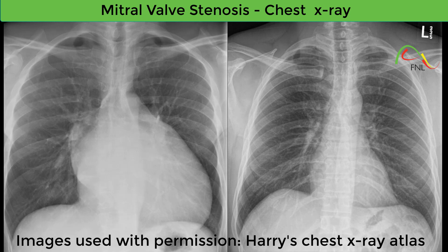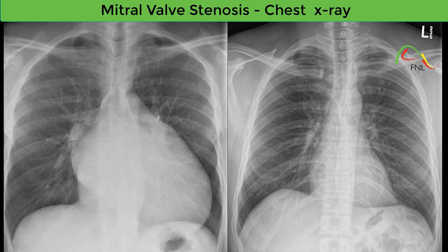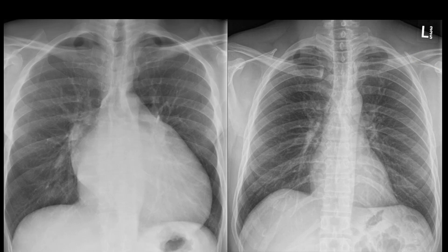Pulmonary vascular cephalization refers to the redistribution of blood into the upper lobe vessels, causing the upper lobe vessels to become larger than the lower lobe vessels — the opposite of what is seen on a normal X-ray. This X-ray is probably not the best example to show pulmonary vascular cephalization, but there are other videos on our website and YouTube channel on this topic. Thanks for watching.